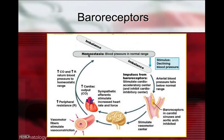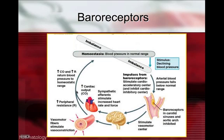With the baroreceptors, the body normally is in a state of homeostasis where blood pressure is in the normal range. When blood pressure falls, this imbalance is sensed by the baroreceptors in the carotid and aortic arch, which will do two things. First, it will stimulate the vasomotor center of the brain, increasing vasomotor fiber activity causing vasoconstriction and increased peripheral vascular resistance. Second, through sympathetic efference, it will stimulate an increased heart rate and contraction, resulting in increased cardiac output. Both increased cardiac output and increased peripheral vascular resistance will help return blood pressure to the homeostatic range.